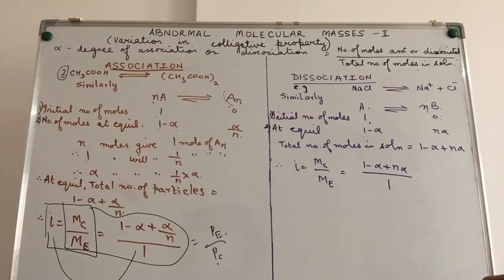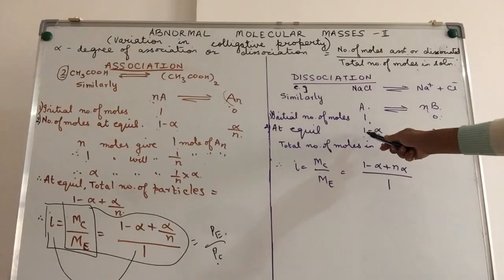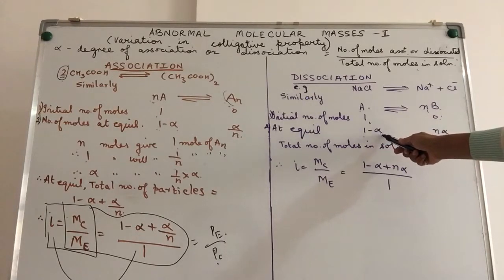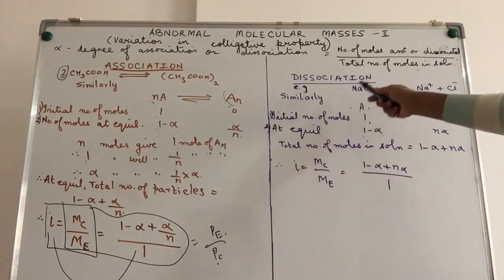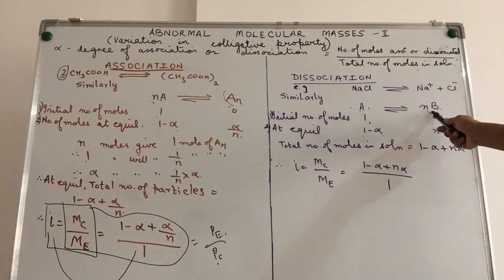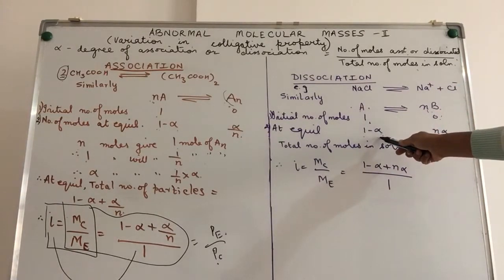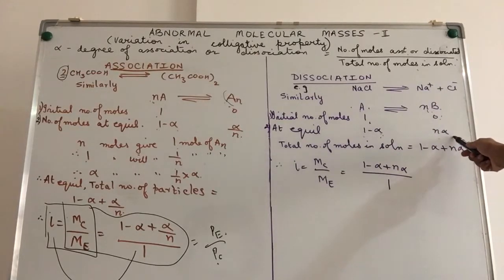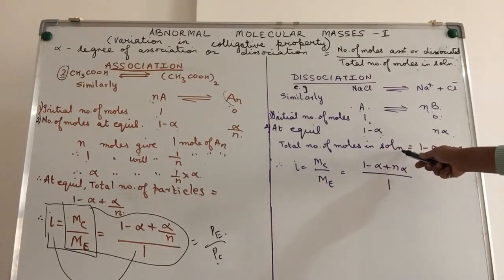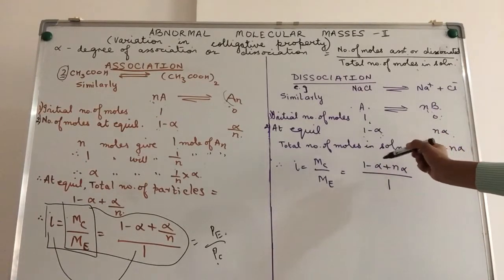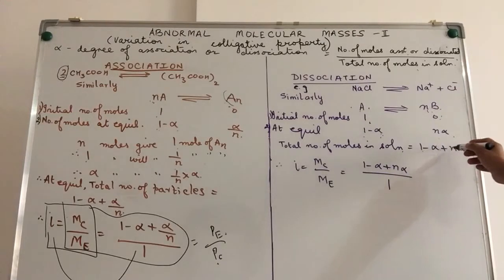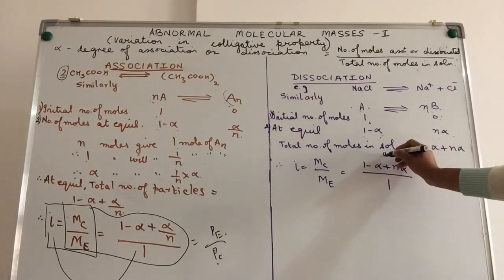It is degree of association or degree of dissociation. Basically, the fraction of the total number of particles which are undergoing association or dissociation. So, number of particles of A left is 1-α. Now, 1 mole of A is giving you n moles of B. Therefore, alpha moles of A will give you nα ions or particles. So, the total number of moles in solution at equilibrium will now come to 1-α + nα.